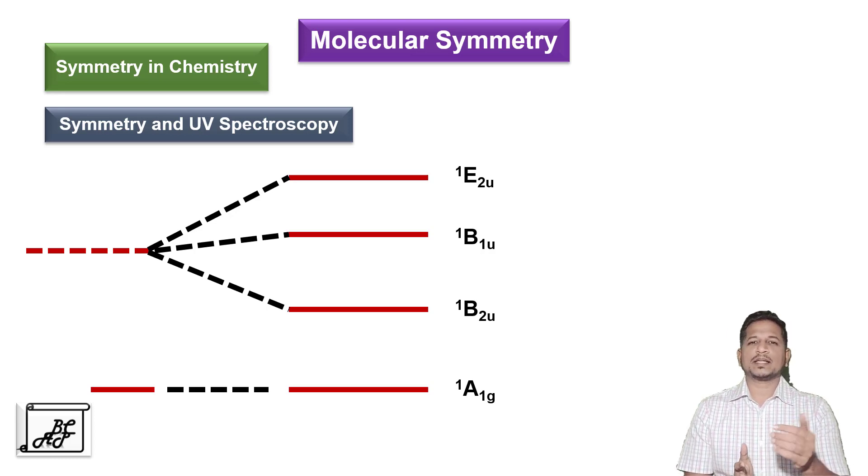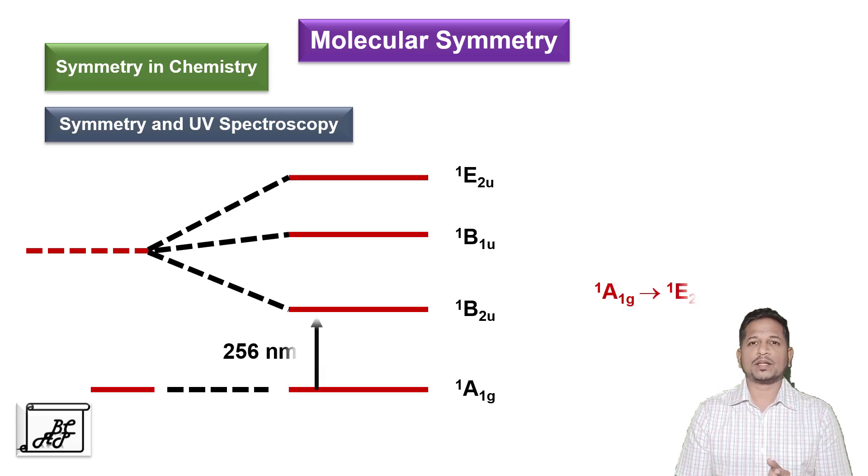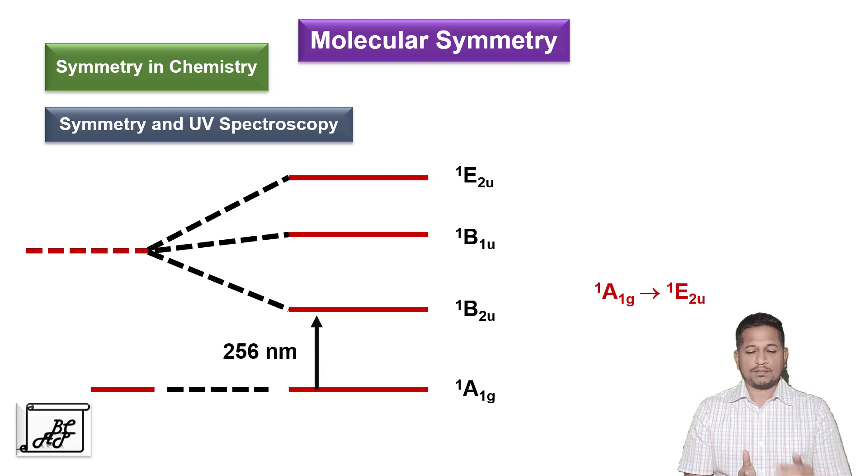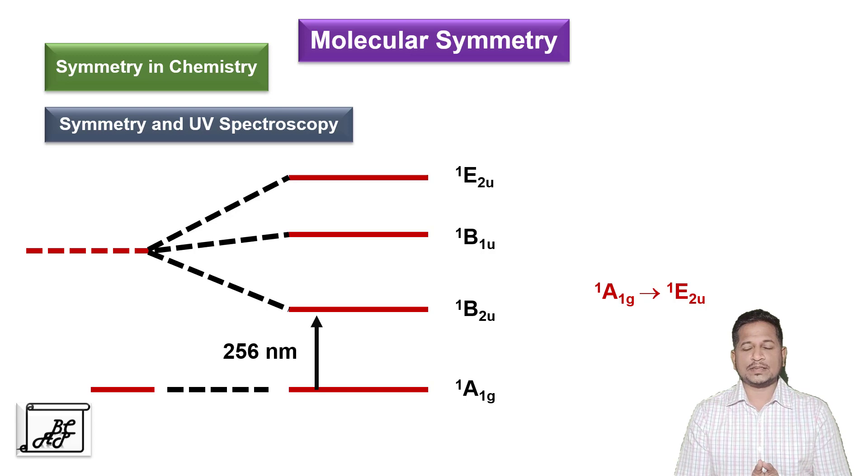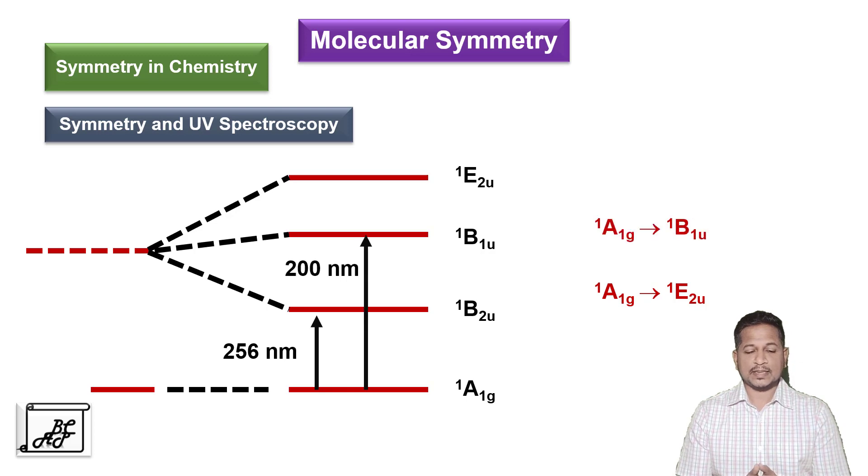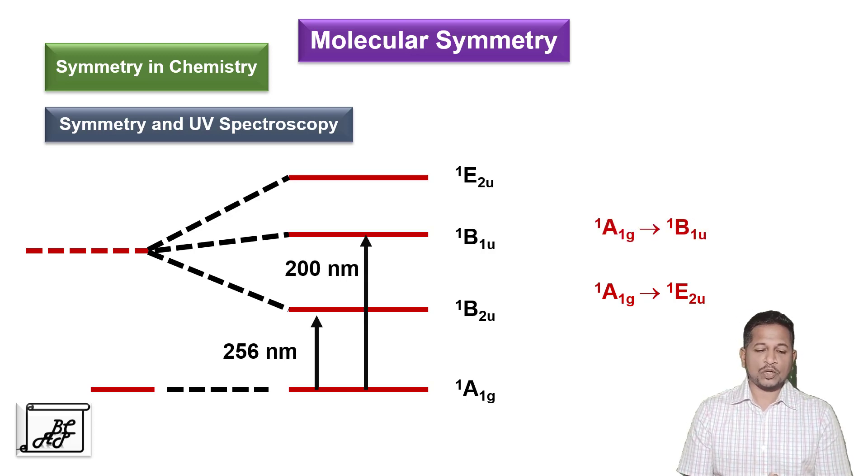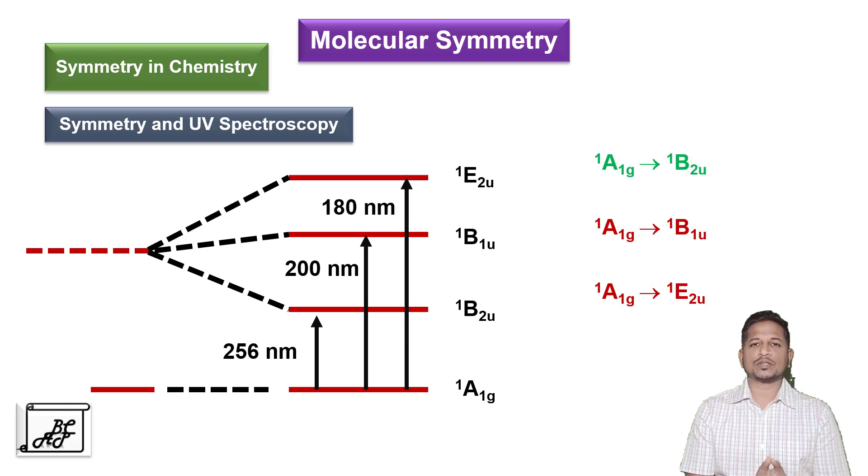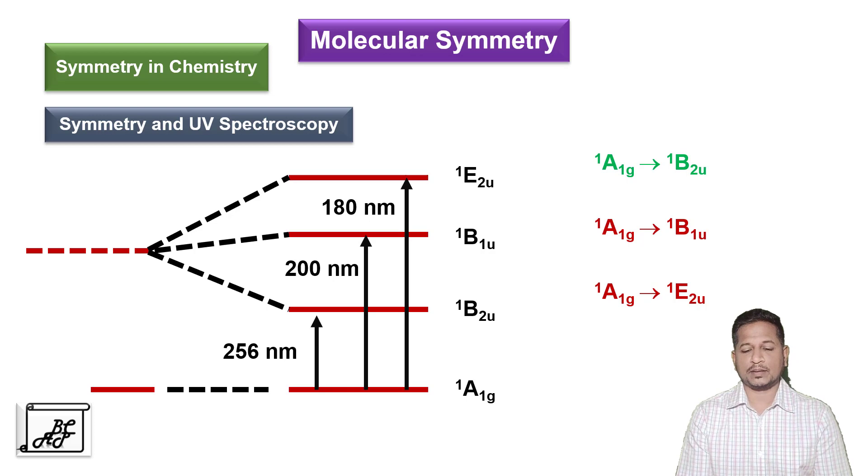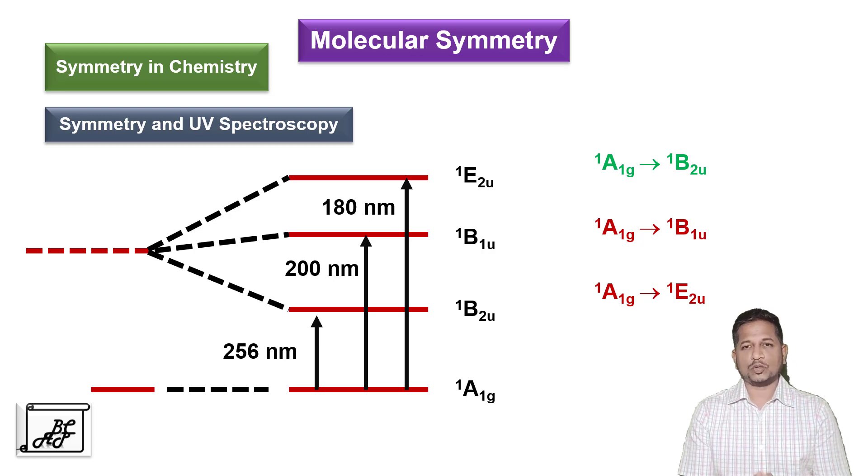The first transition is from 1A1G to 1E2U at 256 nanometers. The second excitation is from 1A1G to 1B1U which occurs at 200 nanometers. And finally, the last transition occurs at 180 nanometers from 1A1G to 1B2U.